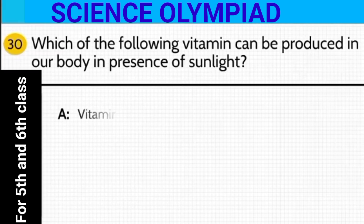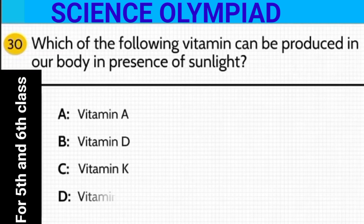Which of the following vitamins can be produced in our body in the presence of sunlight? Is it vitamin A, vitamin D, vitamin K, or vitamin C?